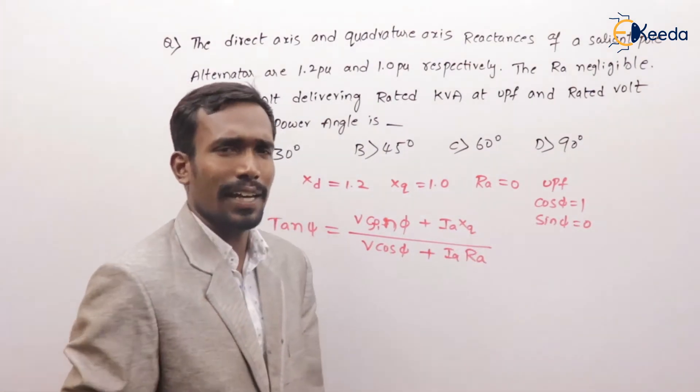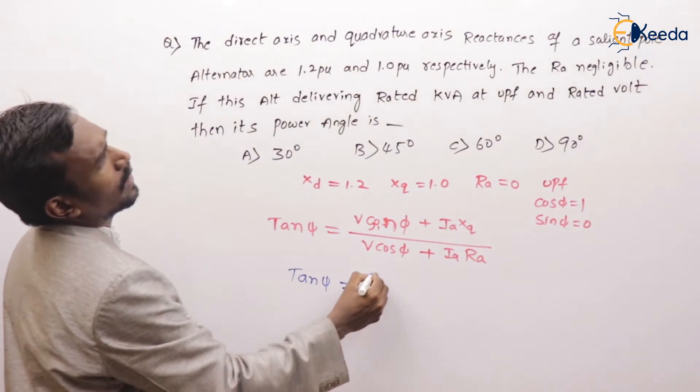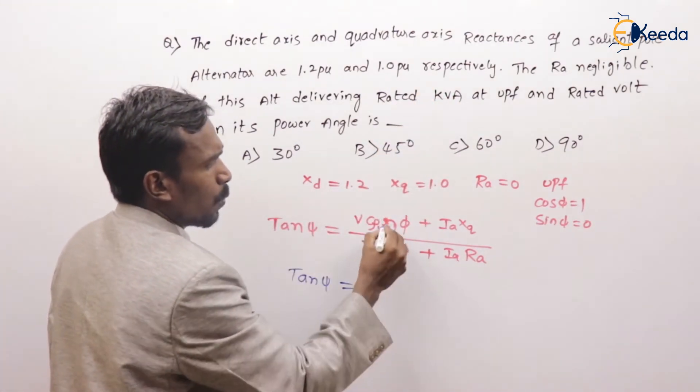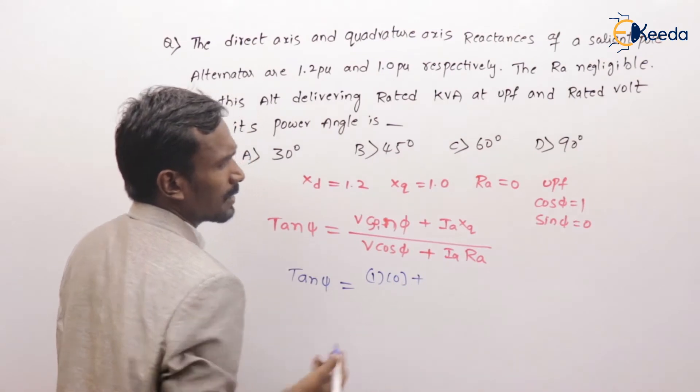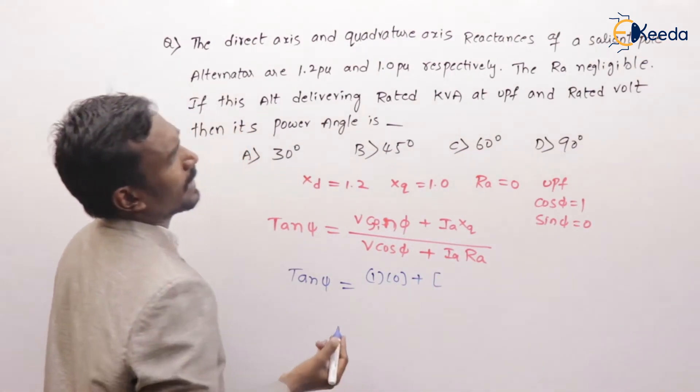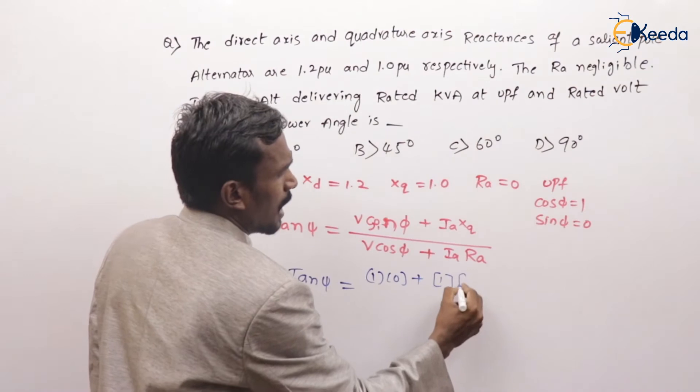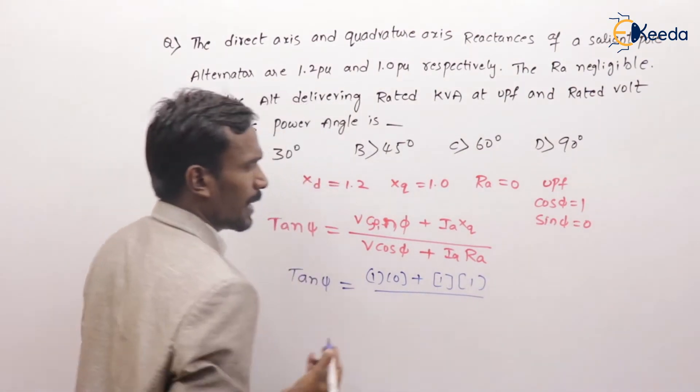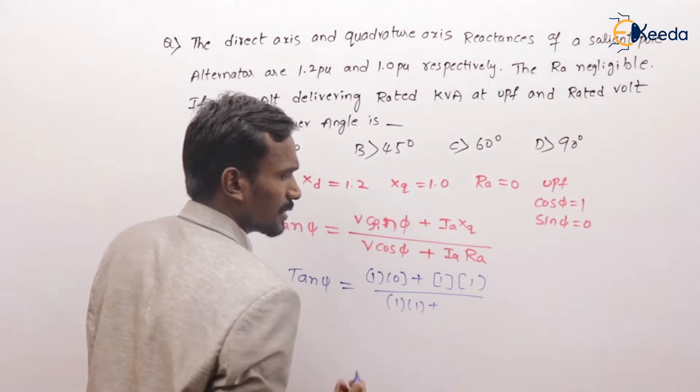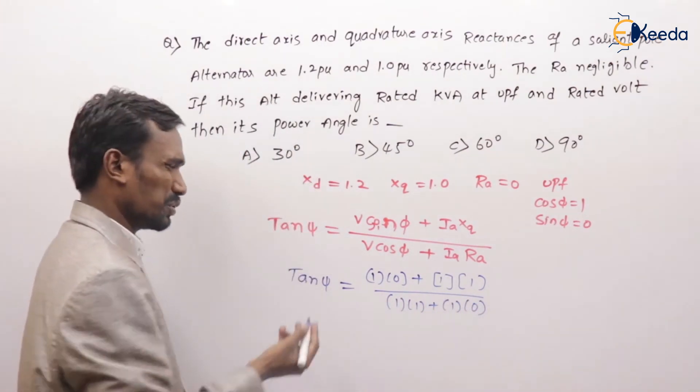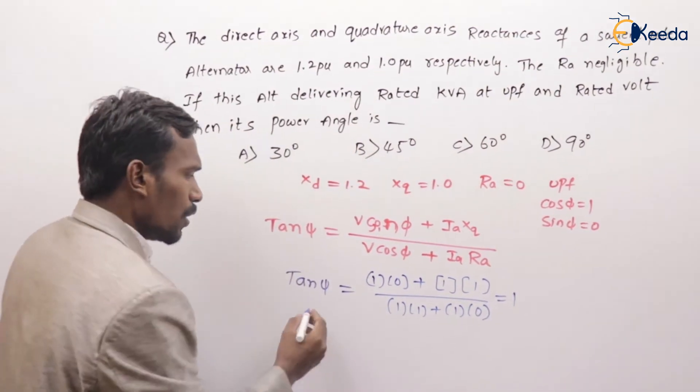Now substitute here. Tan ψ is equal to V—what is the V? Rated voltage, so 1. What is sin φ? At unity power factor, sin φ = 0. What is Ia? They give rated current, so Ia is equal to 1. And xq is equal to 1, divided by V cos φ plus Ia Ra. So the answer for this is 1 divided by 1, which equals 1. If tan ψ is equal to 1, ψ is equal to 45 degrees.